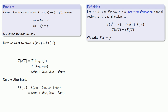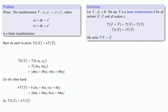We'll compare our two results, and we see that they are in fact equal. So we've verified that the transformation applied to a sum is the sum of the transformed vectors, and the transformation applied to a scalar multiple is a scalar multiple of the transformed vectors. And so that tells us that T is in fact a linear transformation.